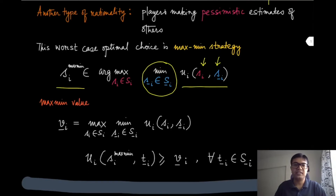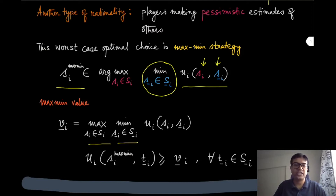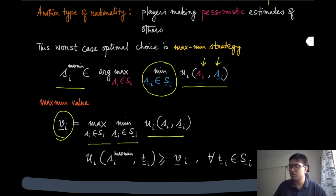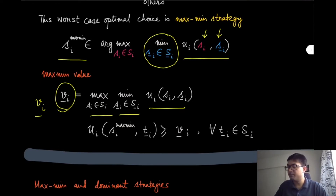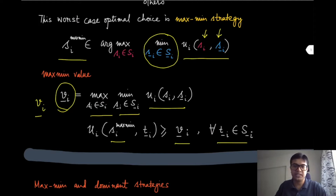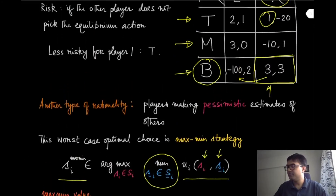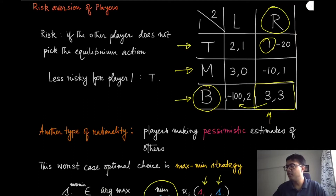We can also define equivalently the maximin value, which is the utility you get at this maximin strategy. You take the max over all strategies of player i and the min over all strategies of the other players, and the utility agent i gets is the maximin value, denoted v lower bar i. It is not very difficult to see that the utility player i gets when it plays the maximin strategy is always going to be at least as much as the maximin value — you can always guarantee this value no matter what strategy the other players choose. In this example, the maximin value for player one happens to be 1.